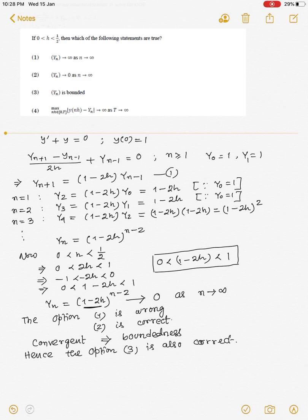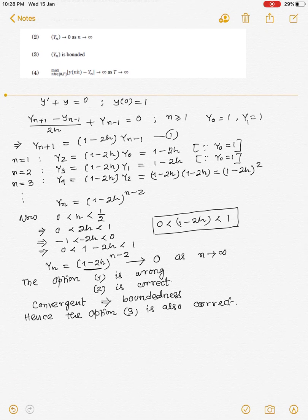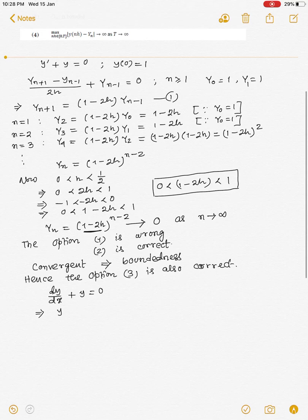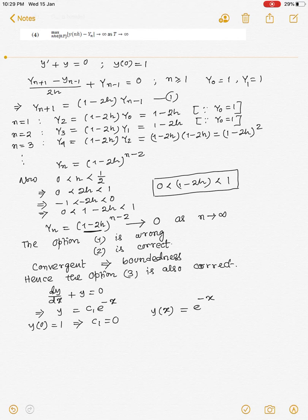Now, let us check option 4. From the given initial value problem, we can solve it as dy/dx + y = 0 and if we solve this, we have y = c₁e^(-x). Now, if we put the condition y(0) = 1, then we have c₁ = 1. Hence, the solution becomes y(x) = e^(-x).